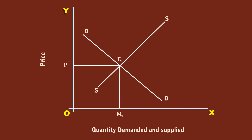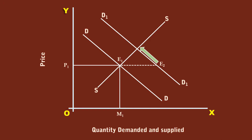Demand increases due to an increase in income of the consumers. The new demand curve is D1D1 and shifts to the right. The immediate effect is there arises an excess demand condition to the tune of E1 to E2. The sellers are willing to supply only E1 units at price P1, but the consumers want to buy E2 units. Competition among the buyers pushes the price up along the demand curve D1D1. As the price moves up, the producers also move up along the supply curve SS.